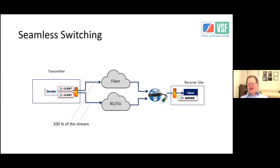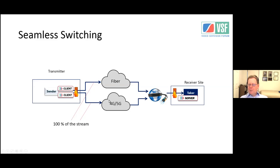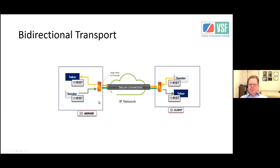RIST has seamless switching. The internet goes down — it happens. By the way RIST works, sending a packet and acknowledging it, you can configure it so that if a packet doesn't arrive via path A, it can request the packet be sent via path A, path B, or both. If you lose one of your two paths and the remaining path can support the throughput, with the main profile you won't even see a glitch.